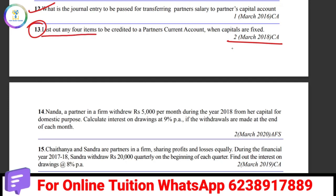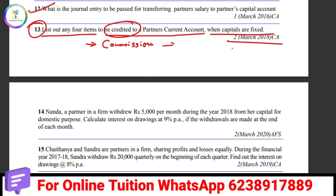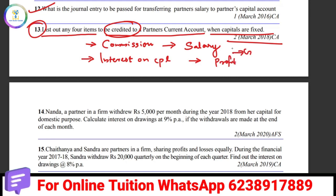List out any four items to be credited to a partner's current account when capitals are fixed. When capitals are fixed, there is a current account. The credit side of the partner's current account includes: commission, salary, interest on capital, profit share, and general reserve share.